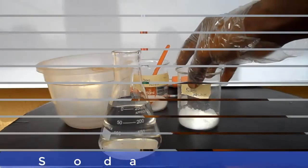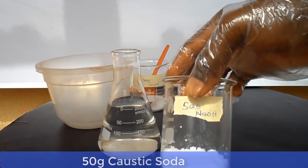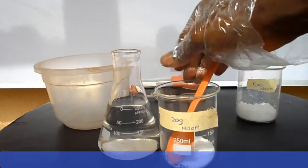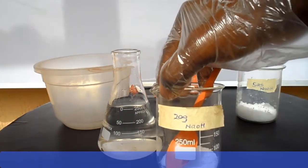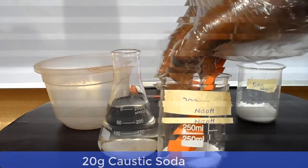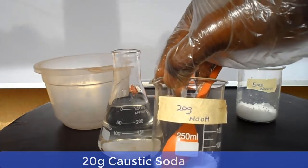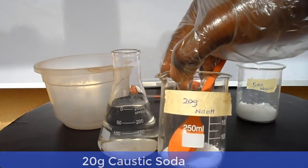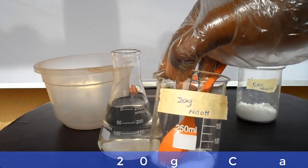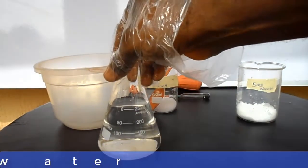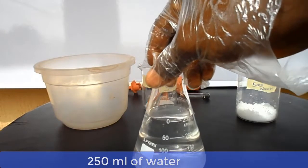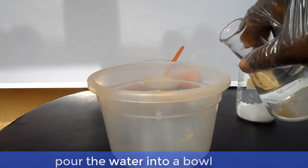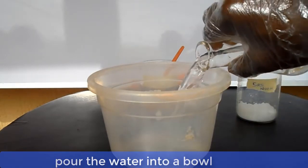Now here we have 50 grams of caustic soda and we also have here in this beaker 20 grams of caustic soda. We have a total of 70 grams of caustic soda. The 20 grams will be used to adjust the specific gravity of the lye to our desired benchmark, that is 1275. Here we have 250 ml of water. Now pour the 250 ml of water into a bowl and add the 50 grams of caustic soda to it.